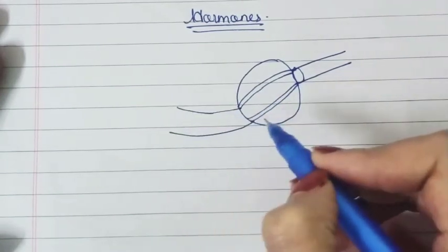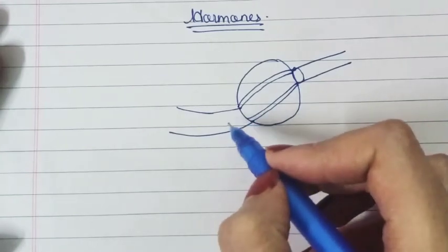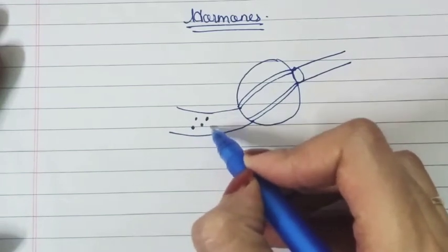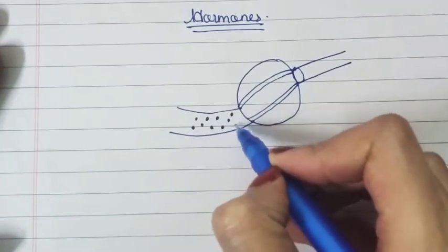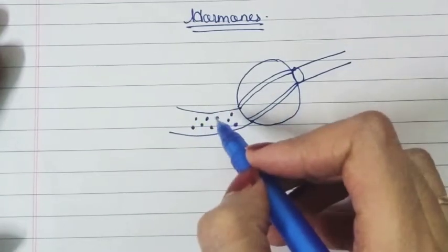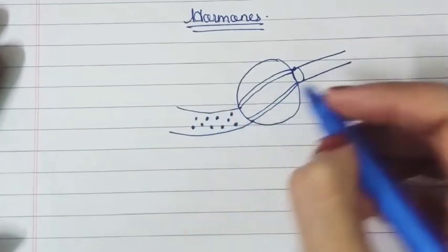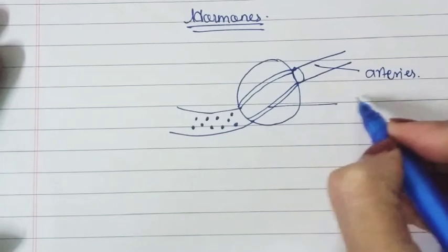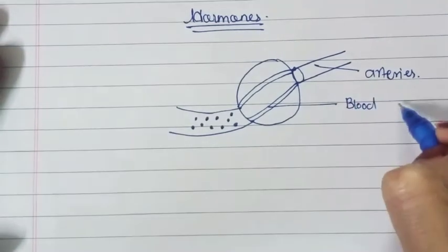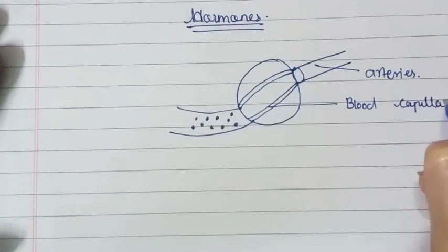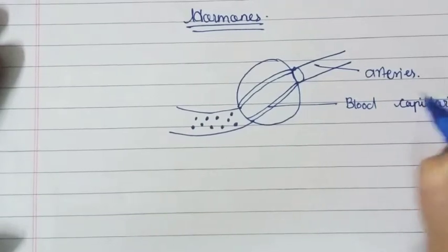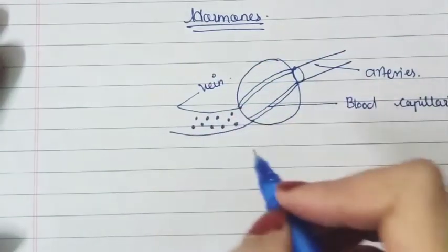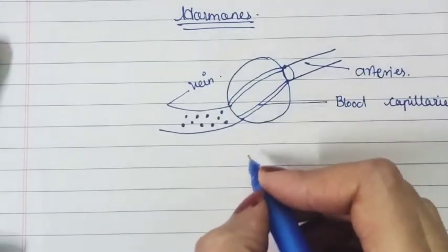The arteries further combine with a vein which carries oxygenated blood along with hormones secreted by the pituitary gland. This dotted structure represents the hormone. Here we label: arteries, blood capillary, vein carrying oxygenated blood with hormones, and pituitary gland.